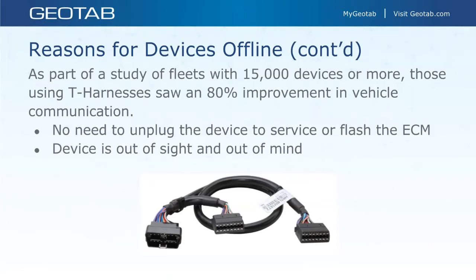One strong recommendation is to use a T-harness. In a study of fleets with 15,000 devices or more, fleets using T-harnesses saw an 80% improvement in vehicle communication. The main advantage is that if the vehicle goes in for service and the ECM needs to be flashed, you don't have a mechanic removing and re-plugging the go device improperly or forgetting to plug it back in. Another advantage: out of sight, out of mind — you still want drivers aware a device is installed, but there's an advantage to it not being visible.